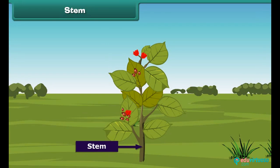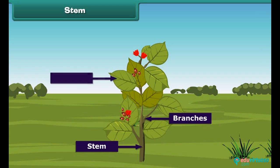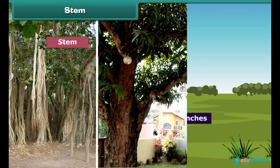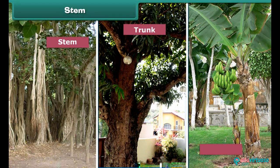Now let's know about the stem. Stem is the green or brownish part of the plant which grows above the ground. It provides support to the plant and bears branches, leaves, flowers and fruits. In young plants, the colour of the stem is usually green, but over time it turns brown. Some trees, like banyan and mango, have a hard, strong and brown stem called a trunk, whereas some trees, such as banana, have a thick but soft and green stem.